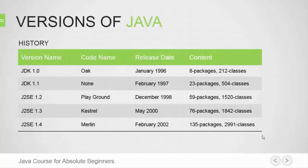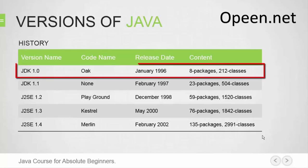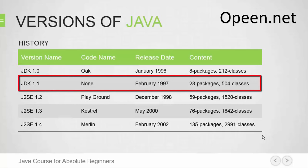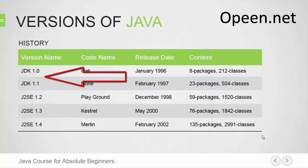Let's review the different versions of Java. From the first version released in 1996 to the latest version 8.0 released in 2014, the Java platform has been actively developed for nearly 20 years. Many changes and improvements have been made over the years. The version JDK 1.0 was the first release of Java in 1996. JDK 1.1 is an improvement of the older version. Both versions 1.0 and 1.1 are named Java Development Kit.